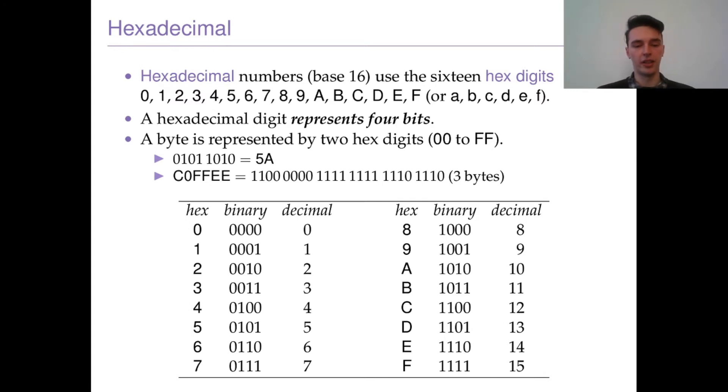Here's an example of how you convert a binary number into hexadecimal: you can just read the first four to see that that's 5, and then you can read the second four to see that that's going to be 10, which is A. Everyone's favorite hexadecimal number, because we're not very imaginative, is COFFEE.